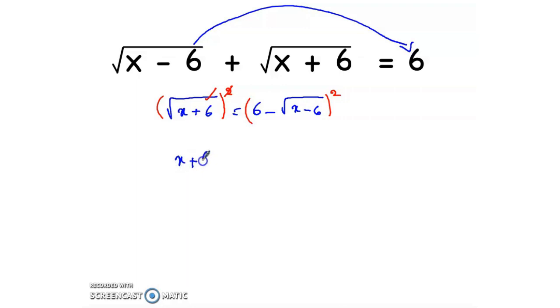So x + 6 equals (a - b)² which equals a² - 2ab + b².